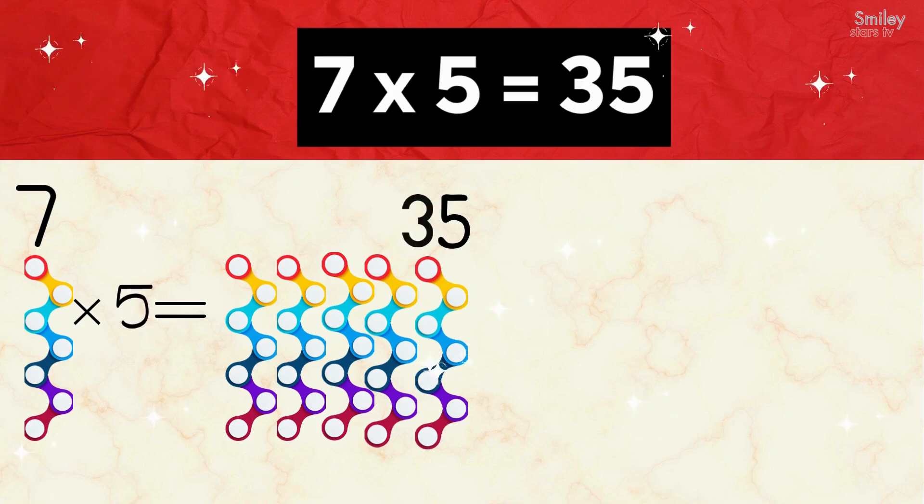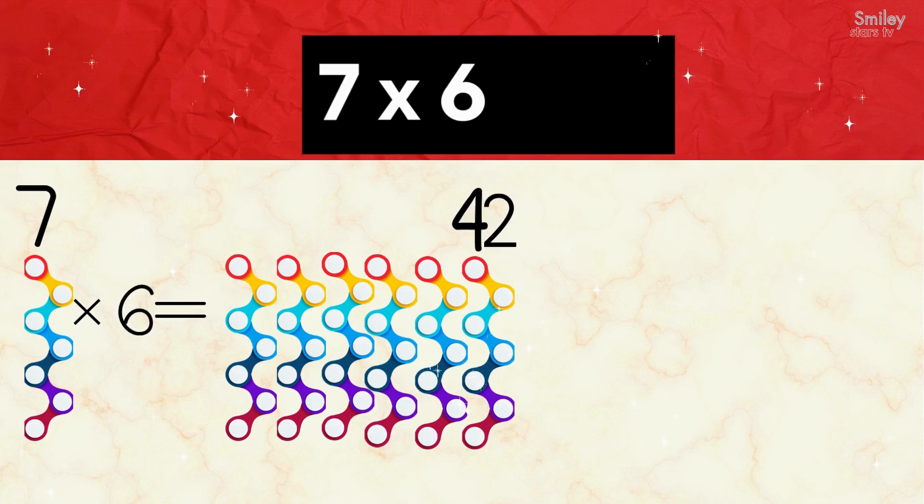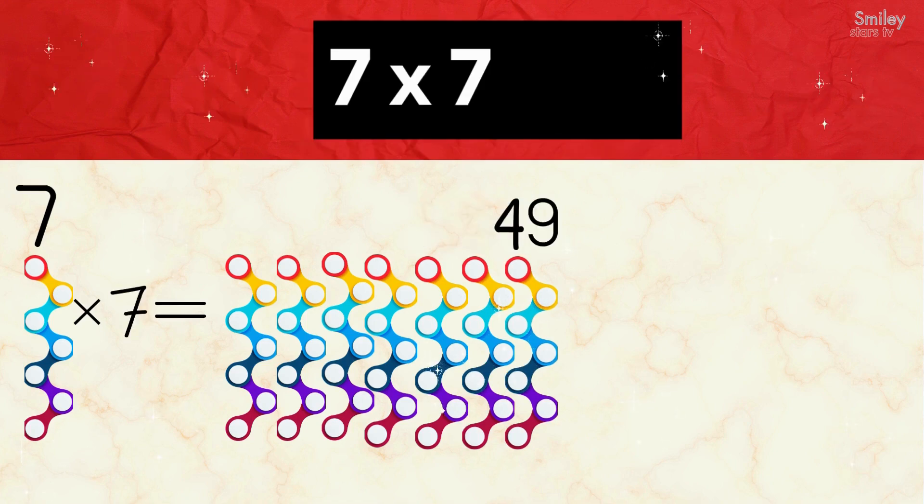Seven fives are thirty-five, seven sixes are forty-two, seven sevens are forty-nine.